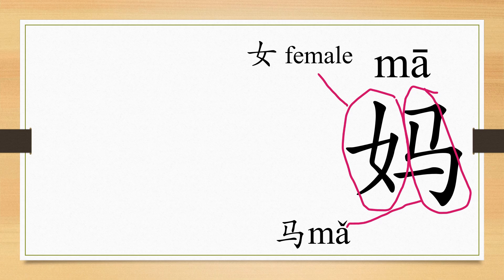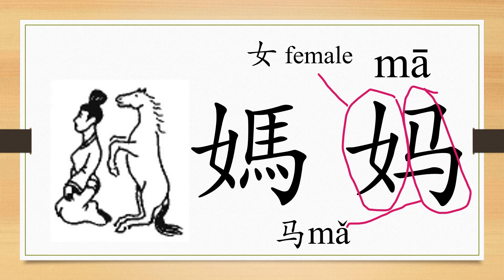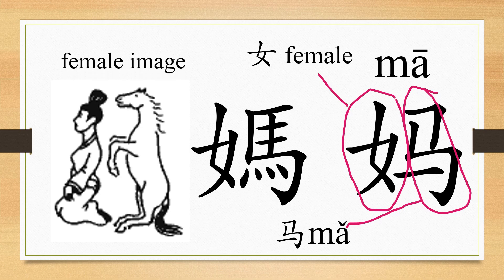The reason that 妈 (Mā) is composed of 女 (Nǚ) and 马 (Mǎ) is that 女, meaning female, indicates that mother is a female, a lady. And 马 — the pronunciation of 马, Mā, is quite similar to the sound a baby makes when calling her mom. So 妈 is an addressing for mother, mom.